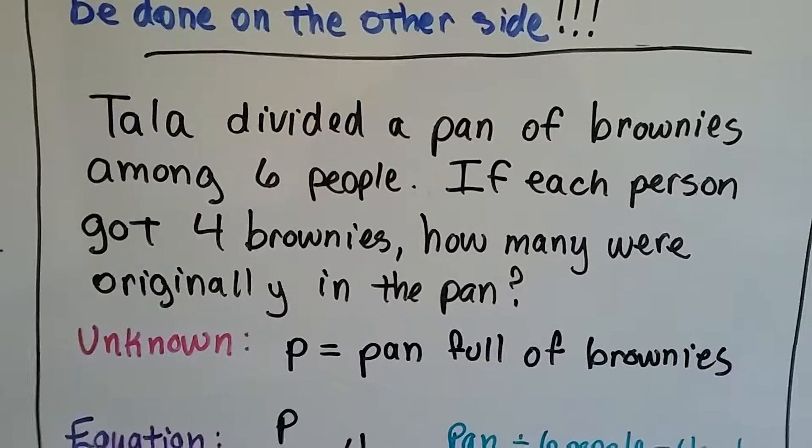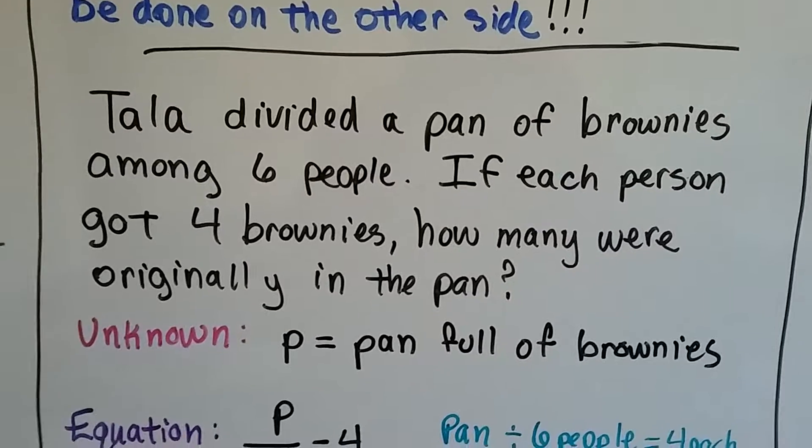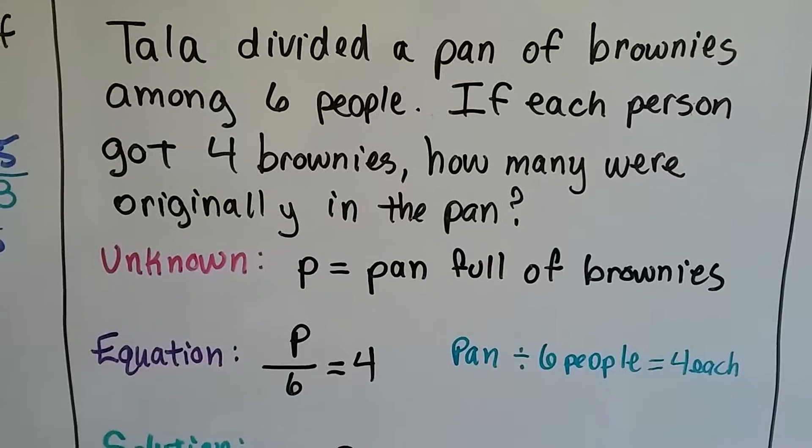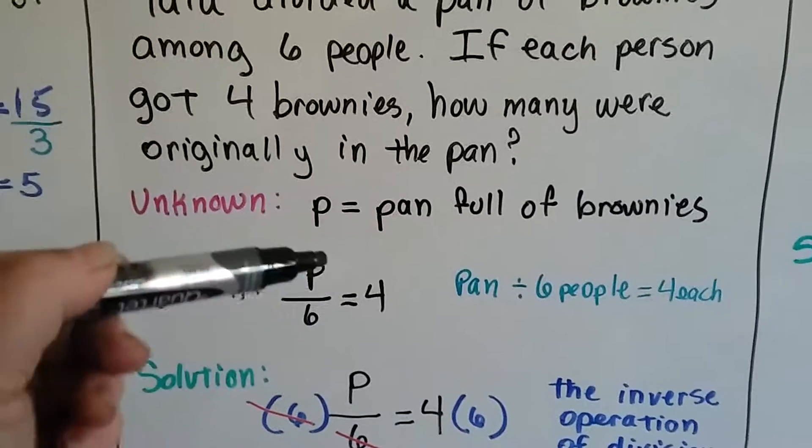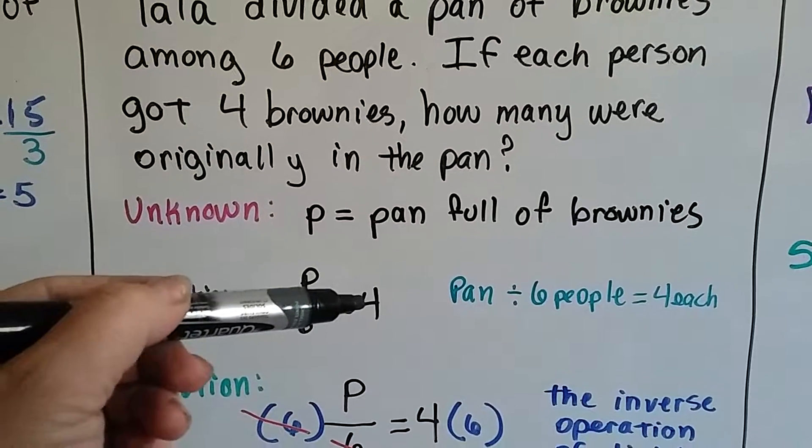So Tala divided a pan of brownies among 6 people. If each person got 4 brownies, how many were originally in the pan? So our unknown is p, the pan full of brownies. And then our equation can be the pan full of brownies divided among 6 people. They each got 4.